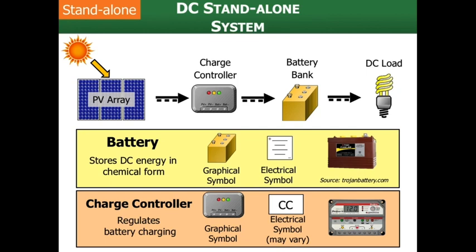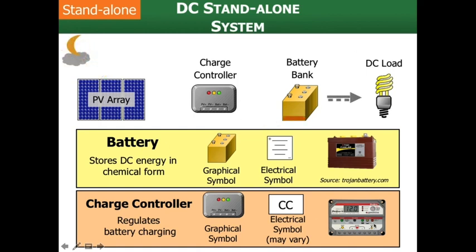Another really important component shown on the screen is the charge controller. A charge controller does just what it says — it's going to regulate charging from the PV array to the batteries. Why do we need a charge controller? Because batteries can get overfilled, and an overcharged battery is not a good thing. It can get hot, it can even explode, it can start a fire — it's a very dangerous thing. That's why we have to have some way to control the charging on our batteries. We'll talk more about the different types of charge controllers, how they work, and how to specify the right type for the system.